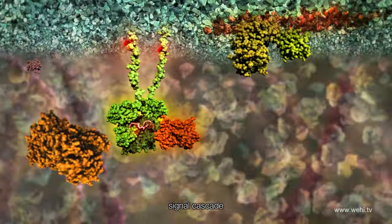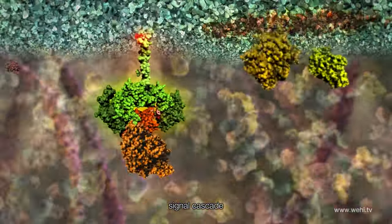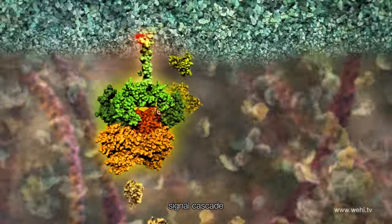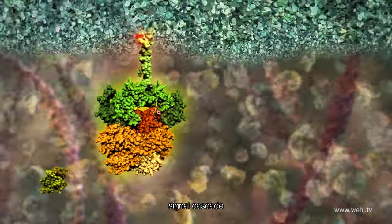The long signal cascade allows tight control of the signaling process as it can be turned on or off at many different points along the way.